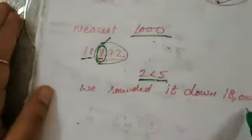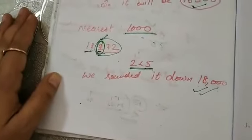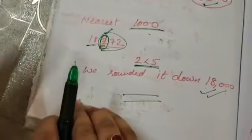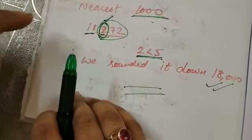Because we have to see 1000, that means we have to include all 3 digits. So the answer will be 18,000. Is it clear to all of you? So we have done nearest 10, nearest 100, and nearest 1000.